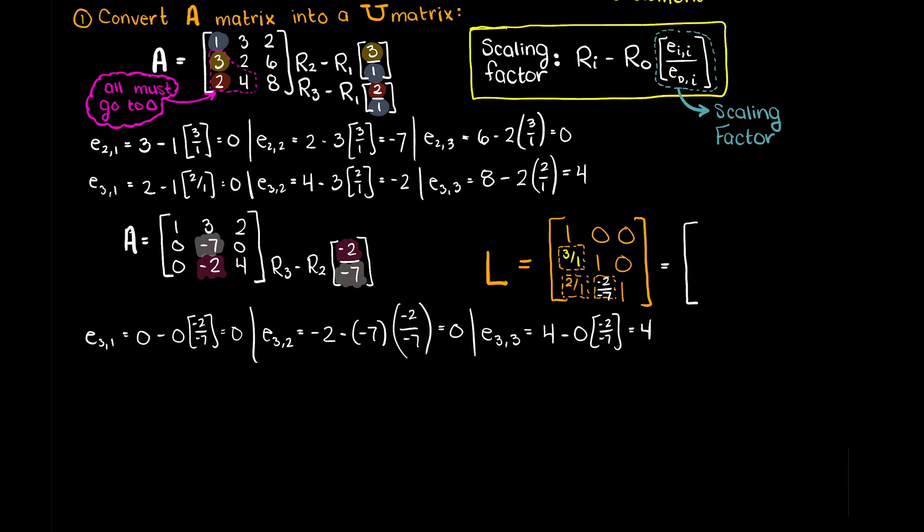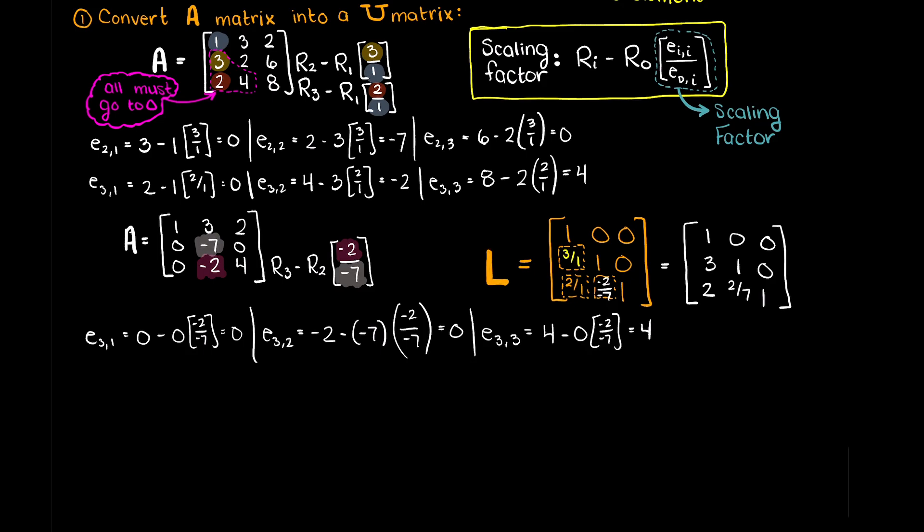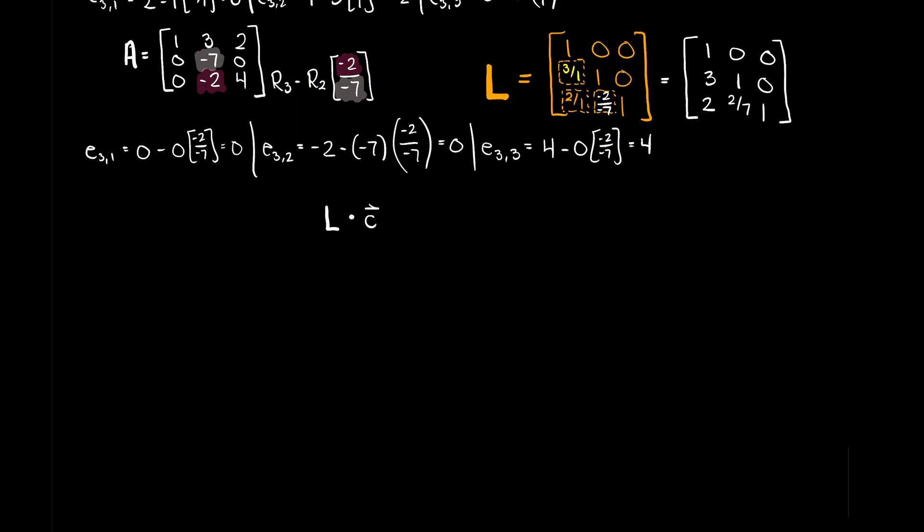We can also add the scaling factor as our final missing piece of our L matrix. Now that our U and L matrices are solved, we can use the following formula to solve for our constant vector values. Which, as we learned in the LU decomposition theory video, we can use to solve for our A matrix.